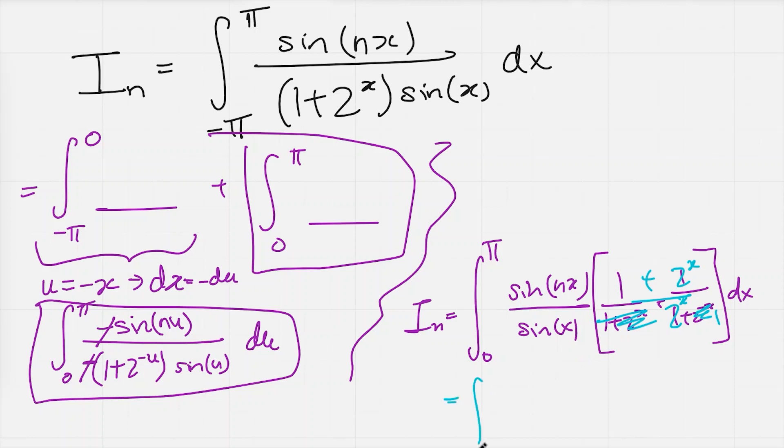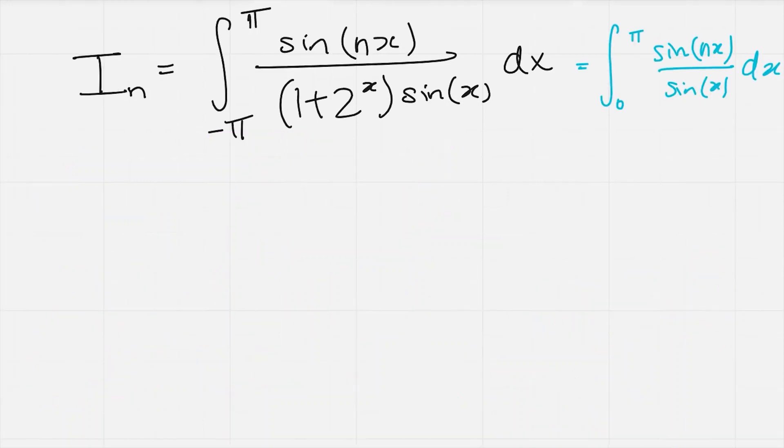So in fact, this integral here is just the integral from 0 to pi of sine of nx divided by sine of x dx. So now we have a much nicer version of our formula for i n. It's the integral from 0 to pi of sine of nx divided by sine x dx. Now let's see how we can evaluate this integral.